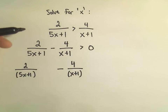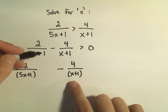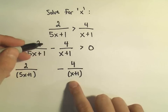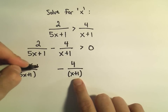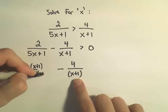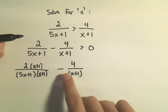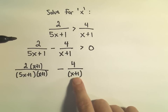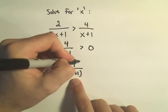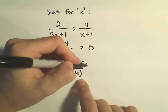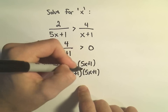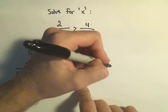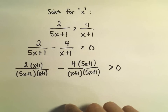To get common denominators, I would have to multiply the numerator and denominator of the first fraction by the quantity x plus 1. And then for the second fraction, its denominator is missing the 5x plus 1. So in order to make that denominator appear, we would simply multiply top and bottom by 5x plus 1. We want that to be greater than 0.